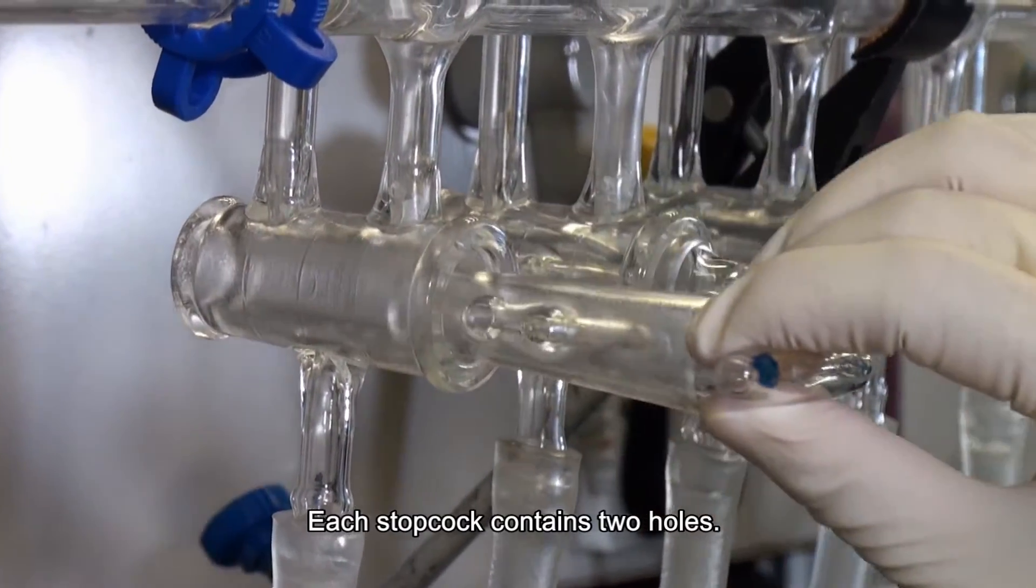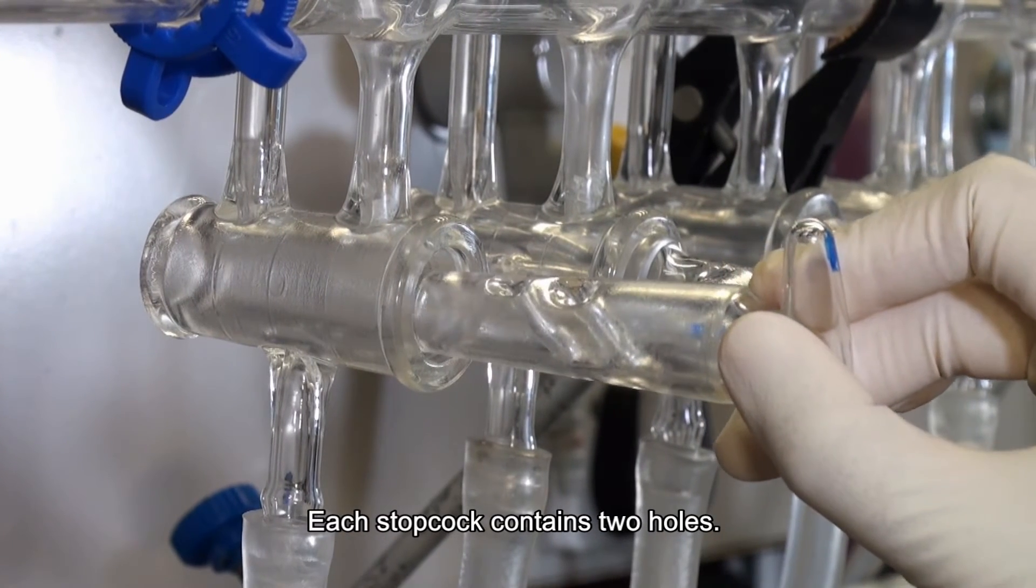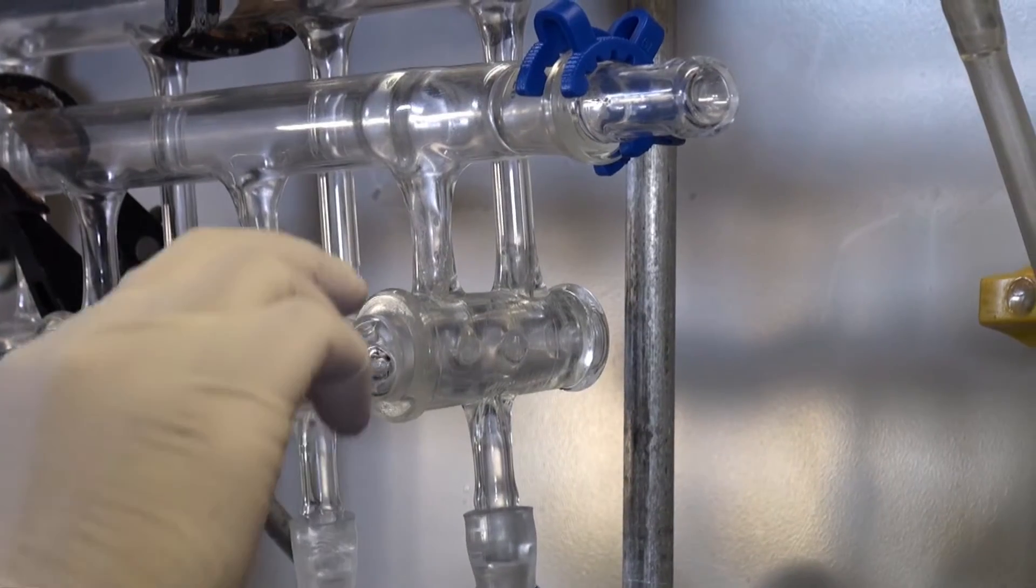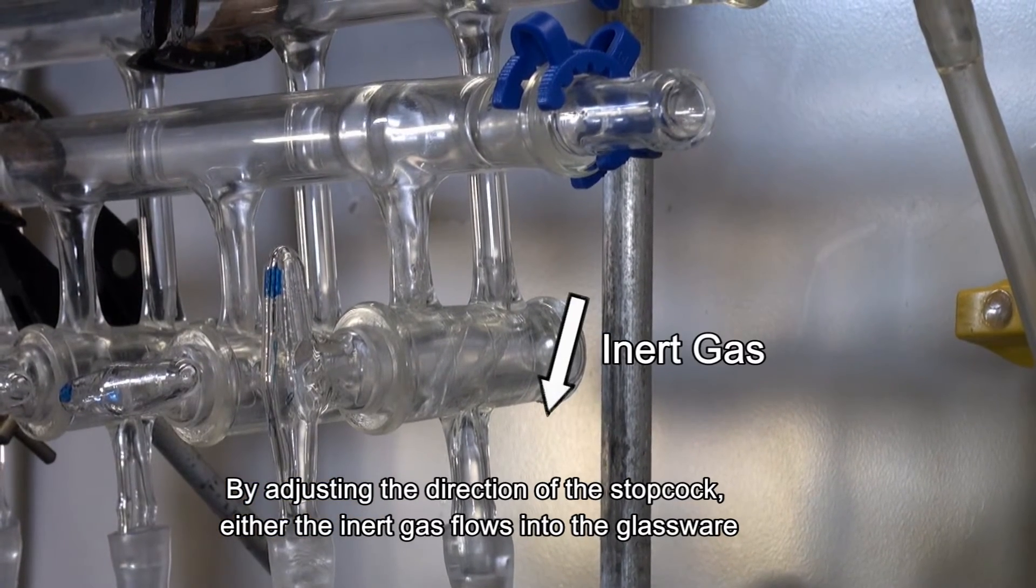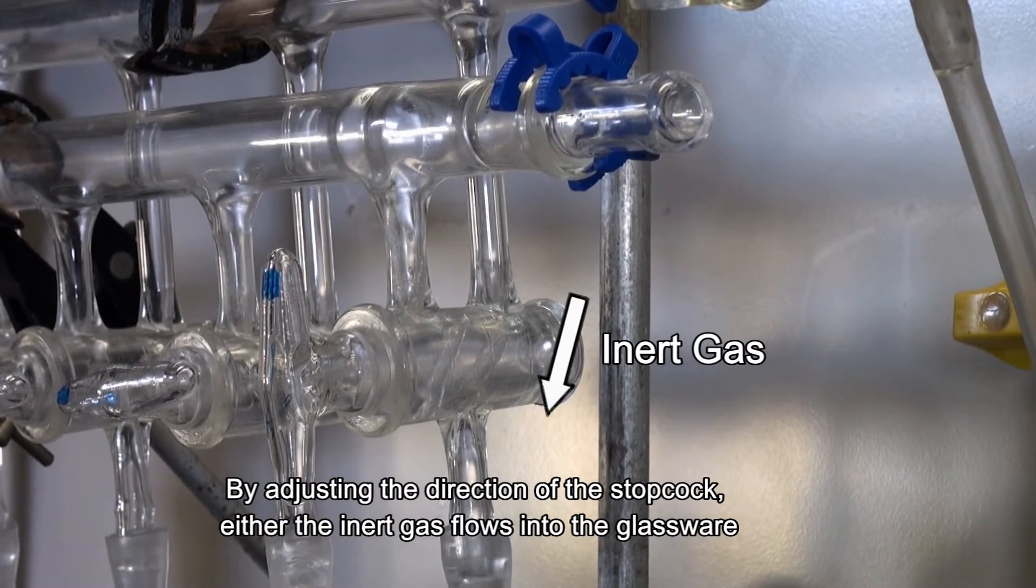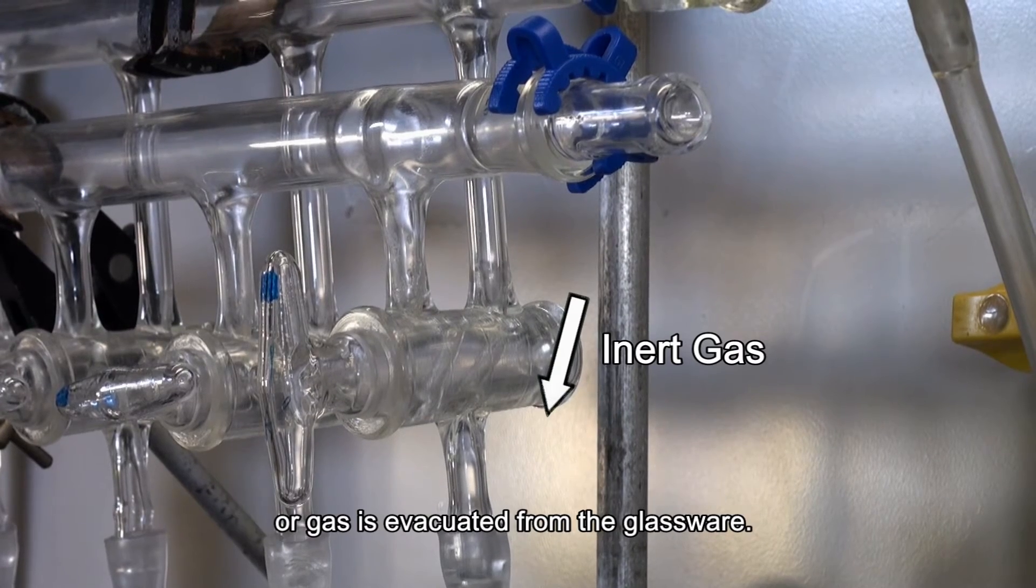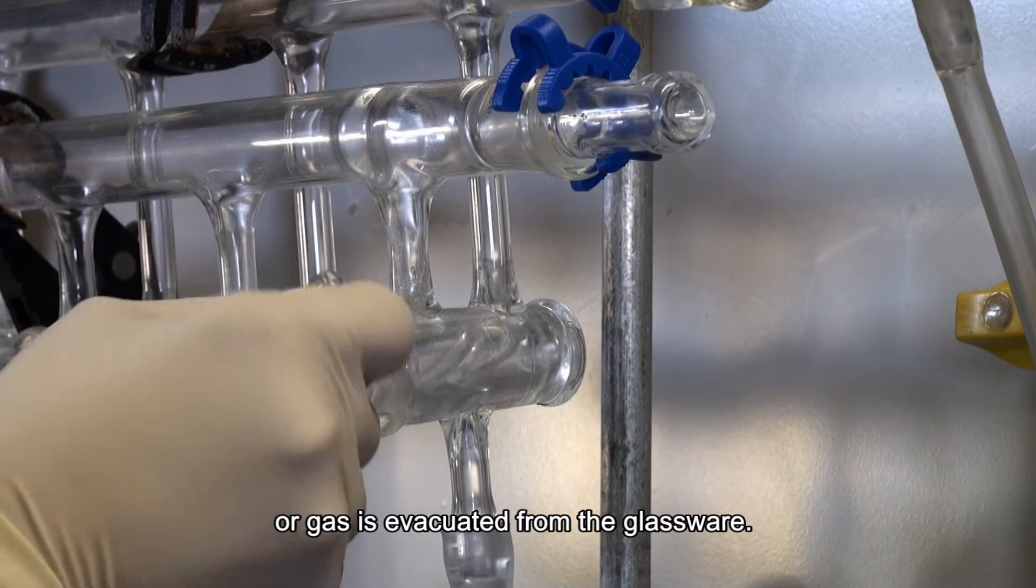Each stopcock contains two holes. By adjusting the direction of the stopcock, either the inert gas flows into the glassware, or gas is evacuated from the glassware.